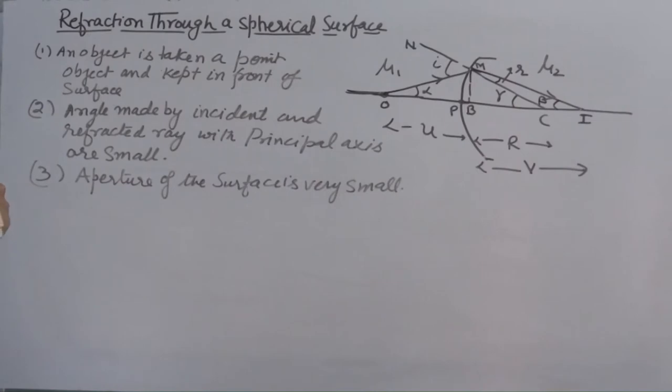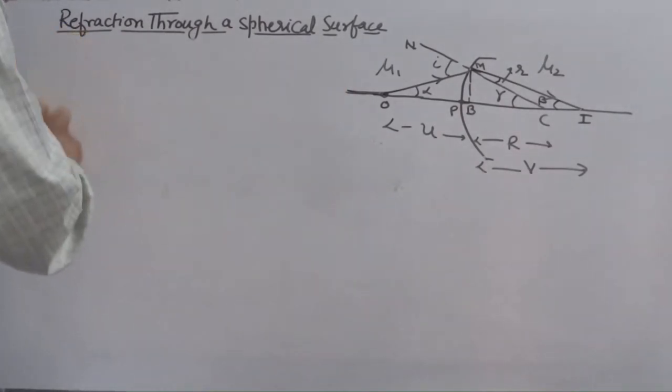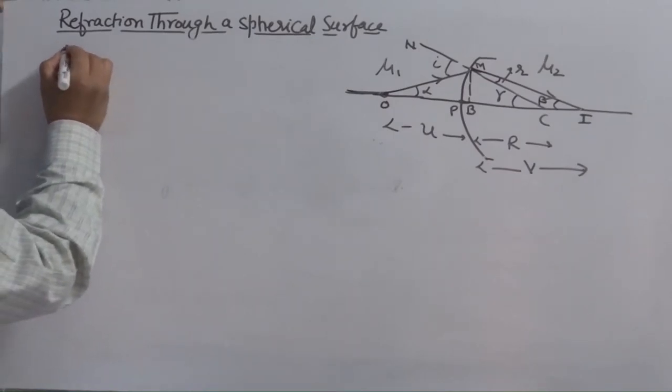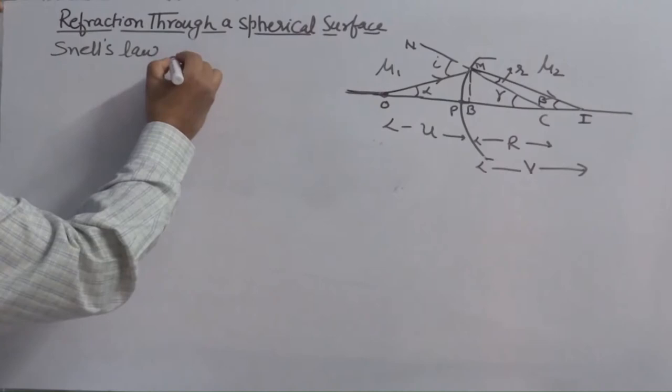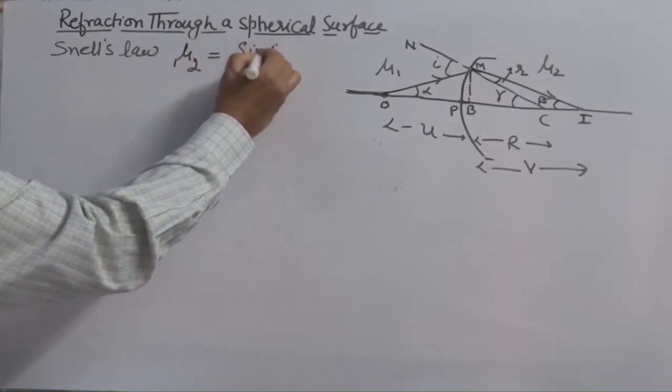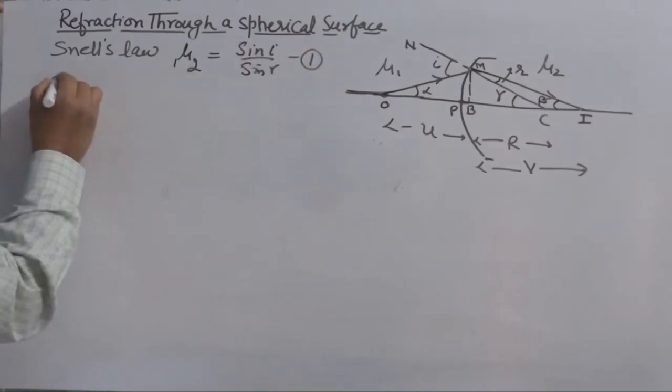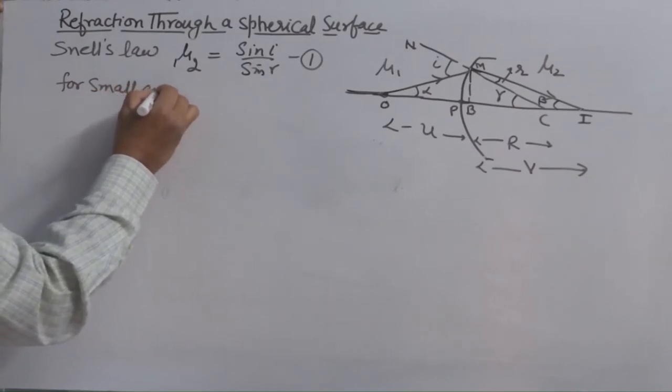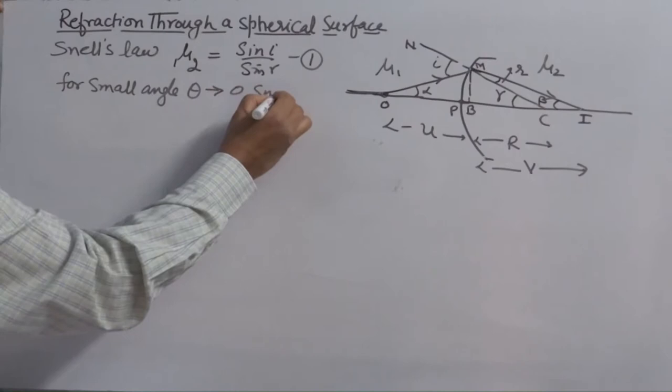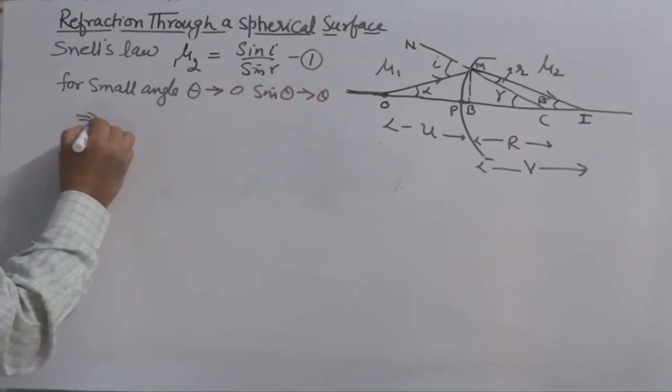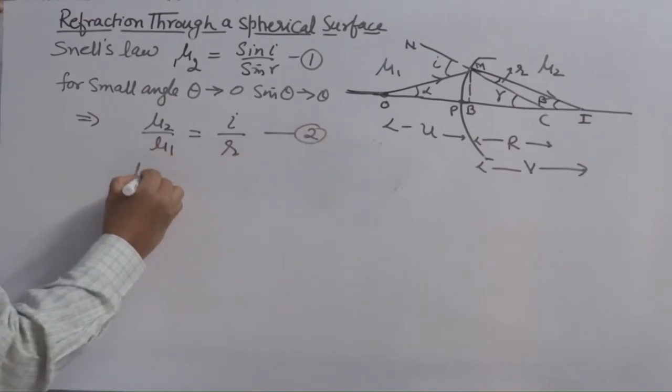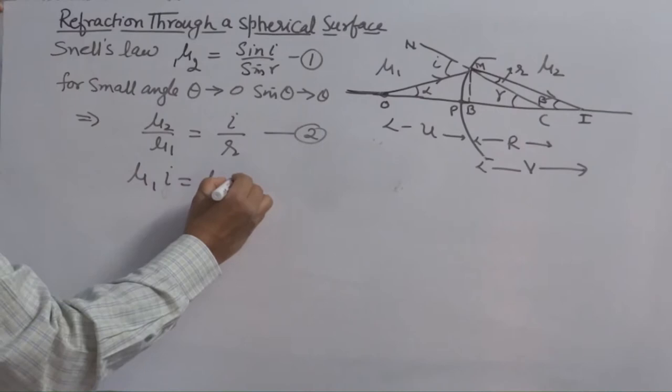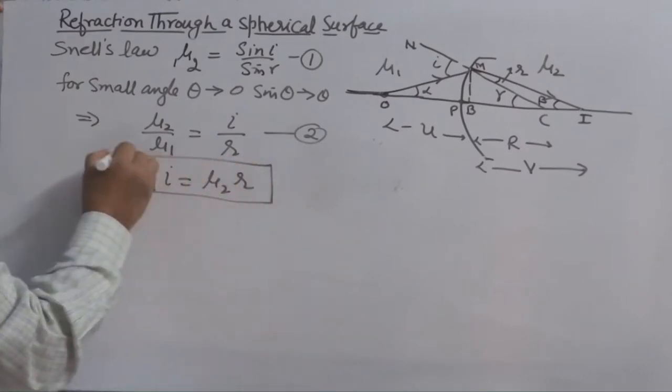We are going to derive basically a relation between U, R and V. According to Snell's law, refractive index of this side medium is mu1, other side is mu2. So mu12 is equal to sin I over sin R. For small angle theta tends to 0, sin theta tends to theta. This shows mu2 over mu1 is equal to I over R. Cross multiplying it you will get mu1 I is equal to mu2 R. This is your equation number 3.